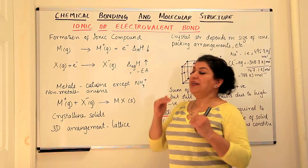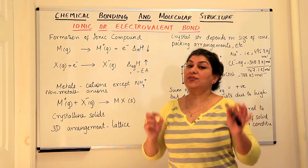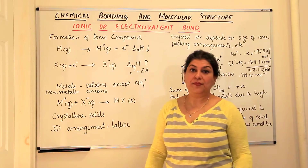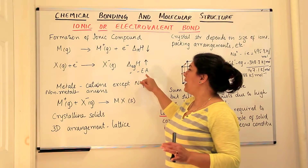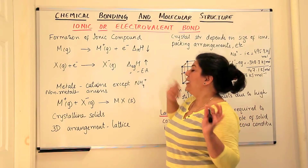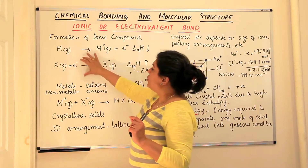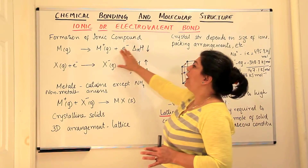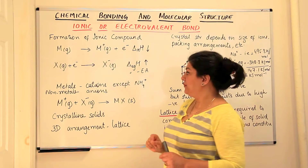The negative of electron gain enthalpy is known as electron affinity. So this is just about the energies involved when a cation and an anion are formed.